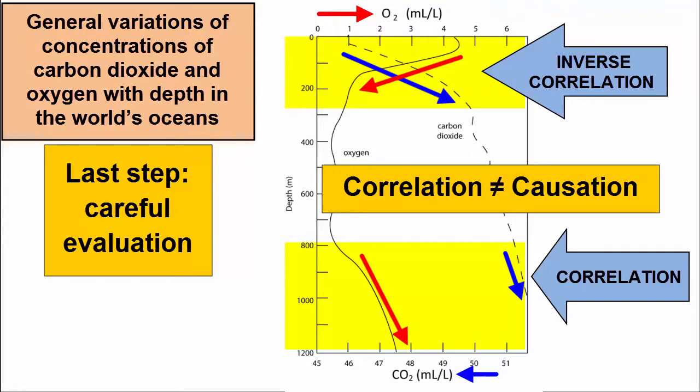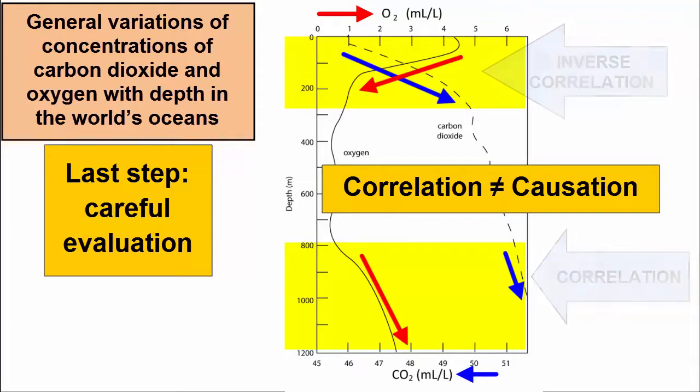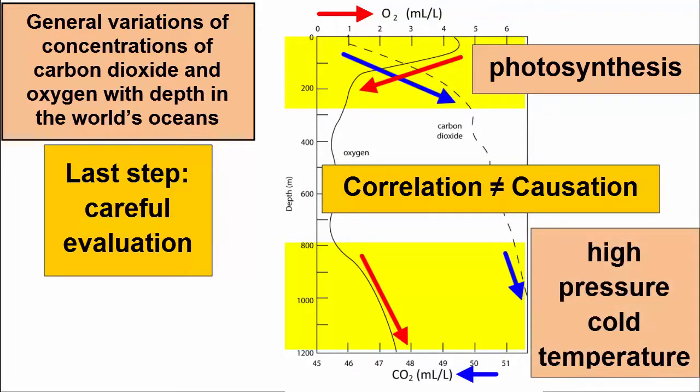there are processes at work at the surface of the ocean where sunlight is abundant that aren't at work at depth where it's dark. Photosynthesis exists at the surface, and this process uses up carbon dioxide and produces oxygen, so that's a good hypothesis for explaining the surface variations. At depth, both gases are subjected to high pressures and cold temperatures, both of which lead to increased gas dissolution, like with carbonated beverages. Perhaps this explains why both gases are found in increasing amounts with depth.